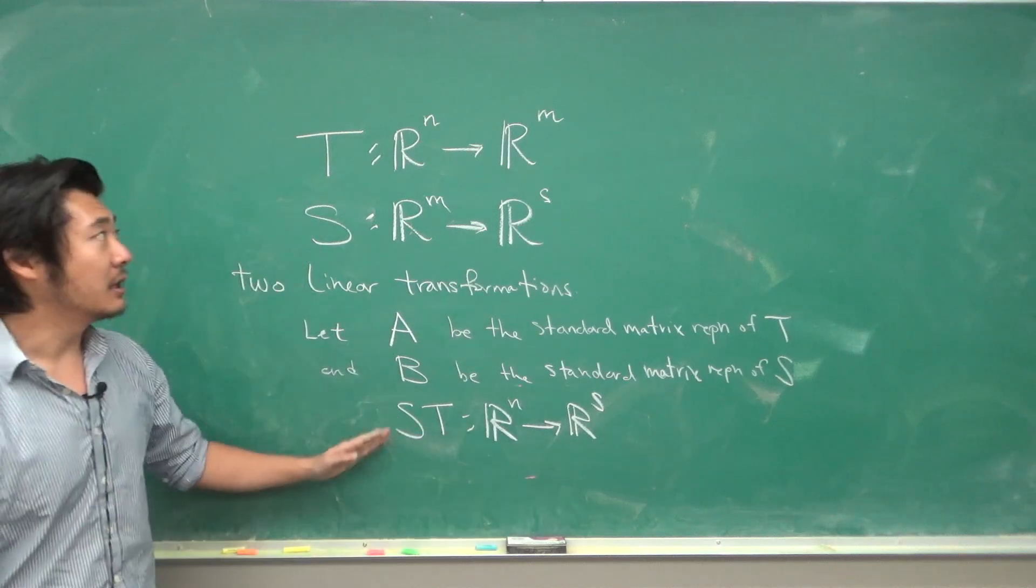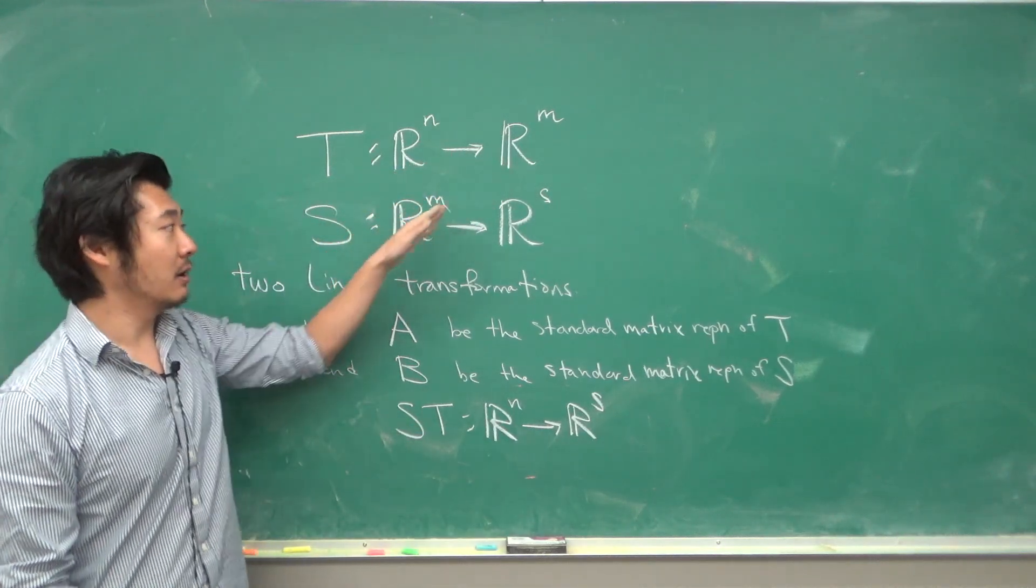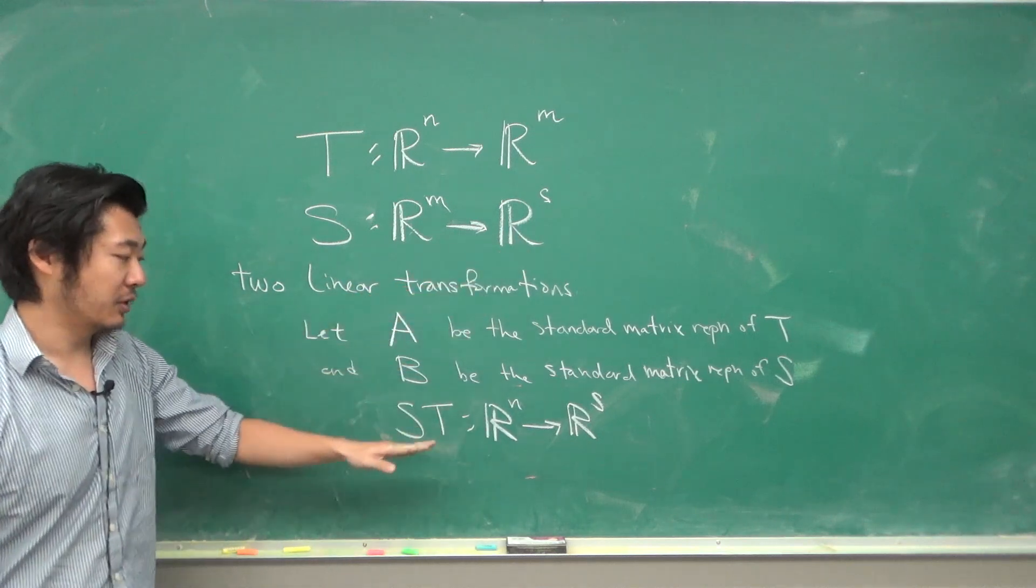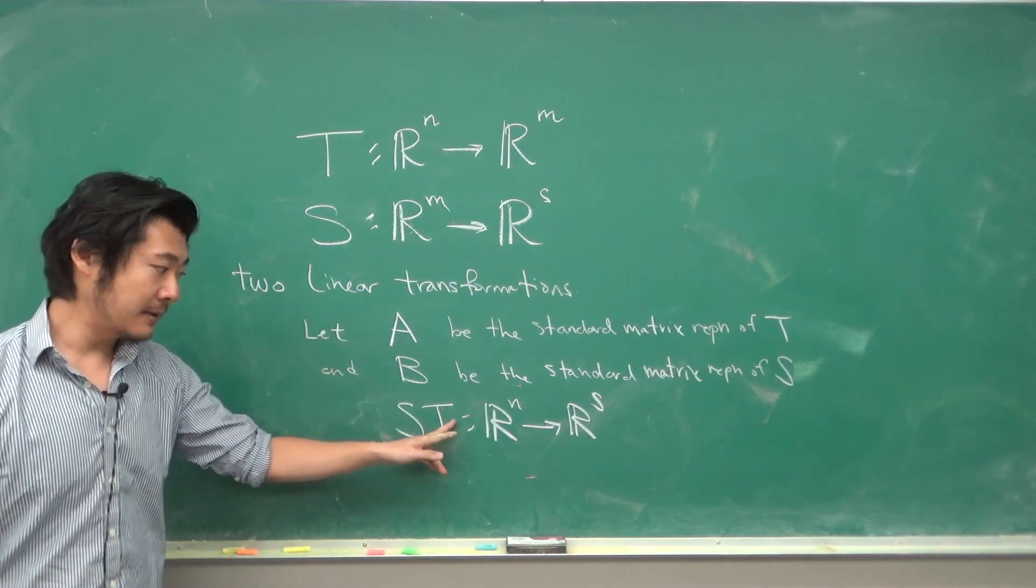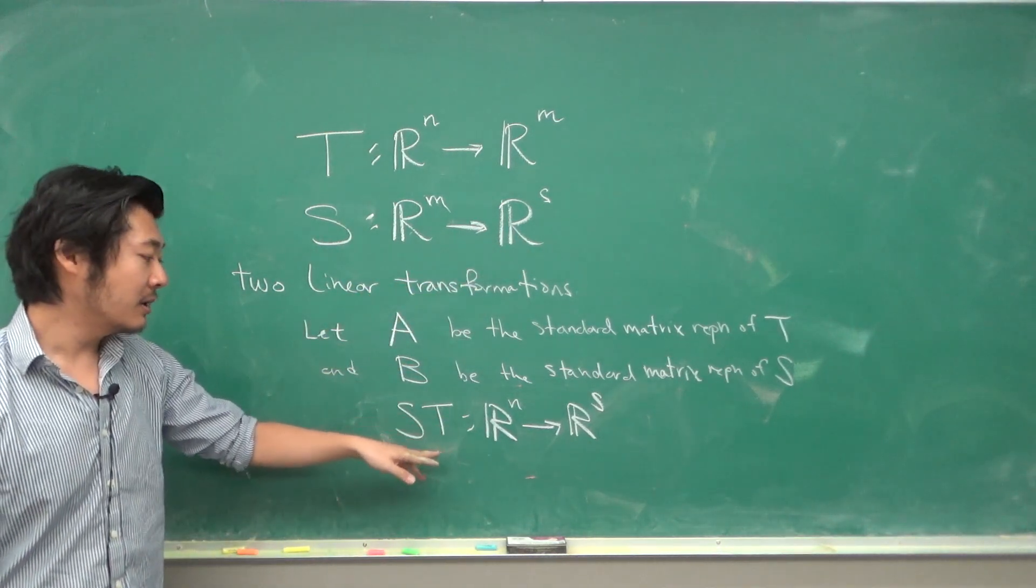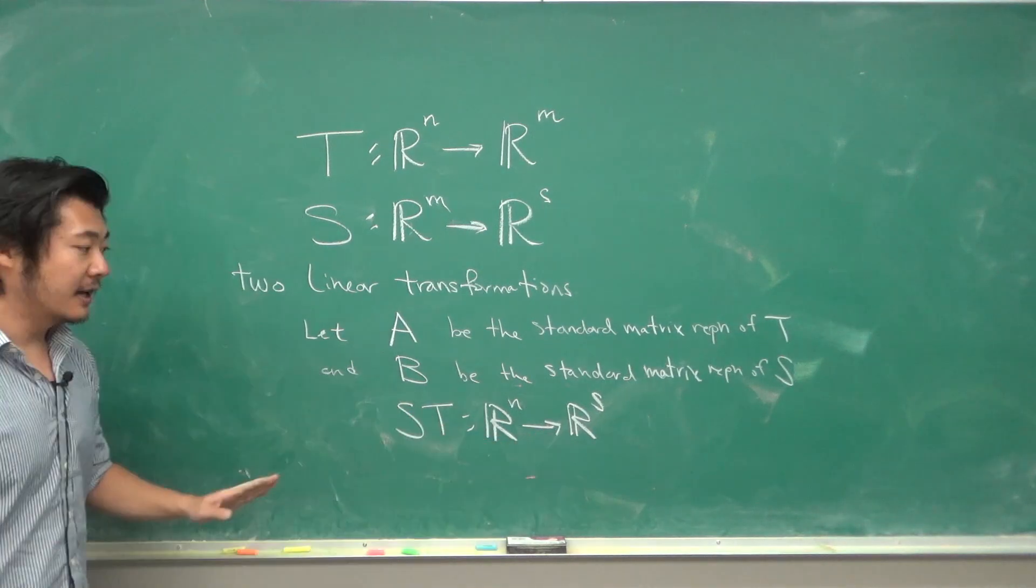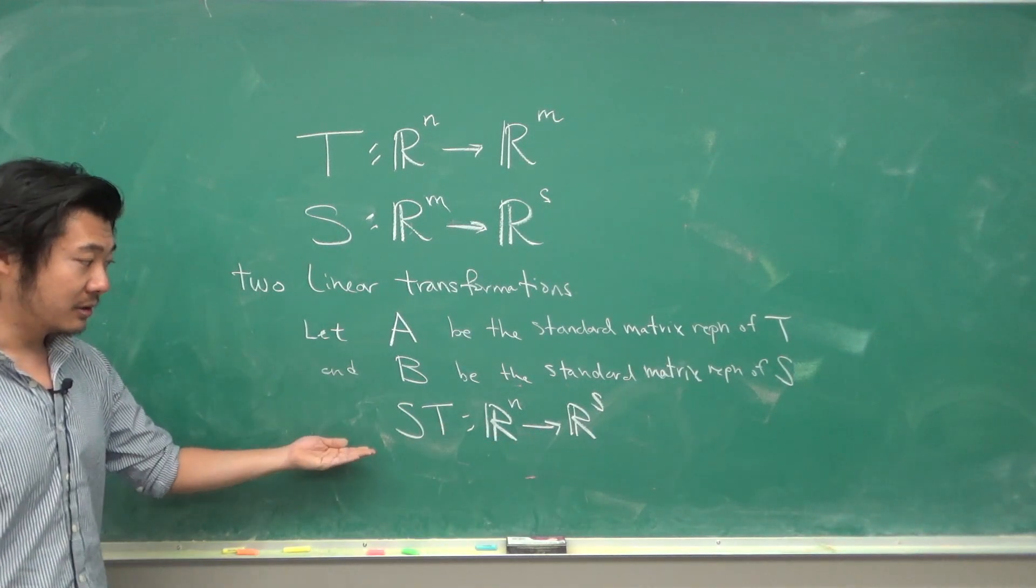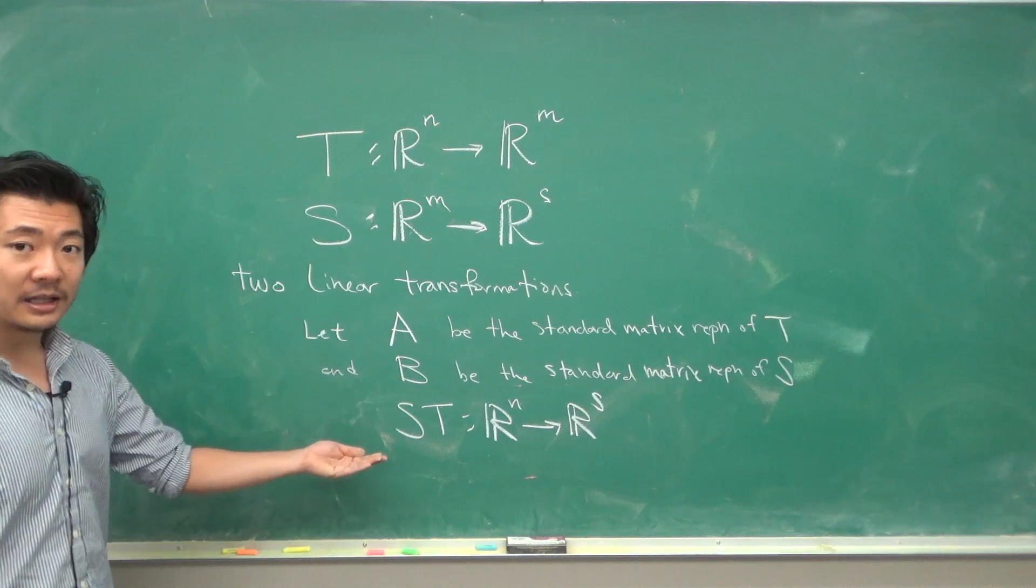If we combine the two linear transformations, we will get another linear transformation ST going from R^n to R^s, because R^n maps to R^m, then R^m goes to R^s. We first take the transformation T, then wherever that goes in R^m, S will map it into R^s. The matrix representation for ST is given by the matrix B times A.